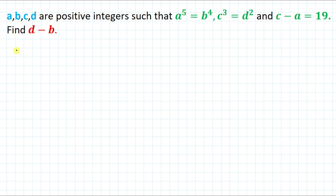Hello everyone, welcome to Root to Mathematics. In this video we're going to solve an interesting algebraic question. The given question is: a, b, c, d are positive integers such that a to the power 5 equals b to the power 4, and c to the power 3 equals d squared, and c minus a equals 19. Find the value of d minus b.